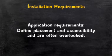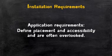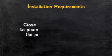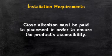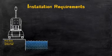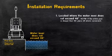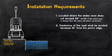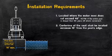Second are the application requirements, which define placement and accessibility. These requirements are a major predictor of compliance and an area that is often overlooked. Because each pool is unique, close attention must be paid to placement in order to ensure the product's accessibility. ADA states that pool lifts shall be located where the water level does not exceed 48 inches. In the raised position, the center line of the seat shall be located over the deck and a minimum of 16 inches back from the pool's edge.